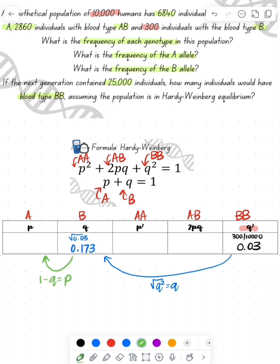Now since P and Q equal 1, 1 minus my Q is going to equal my P. So 1 minus 0.173 is 0.827.